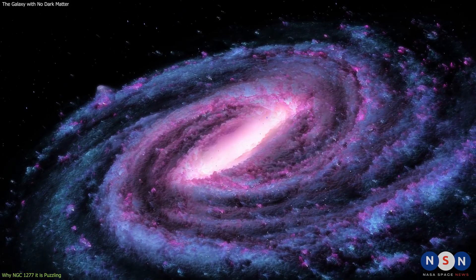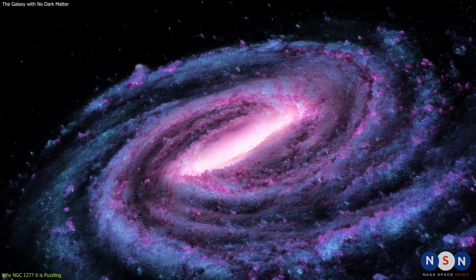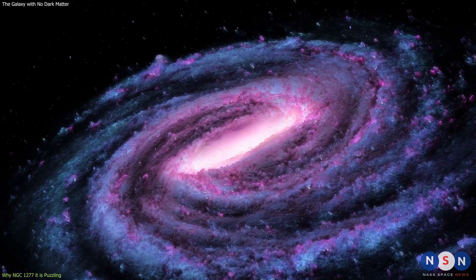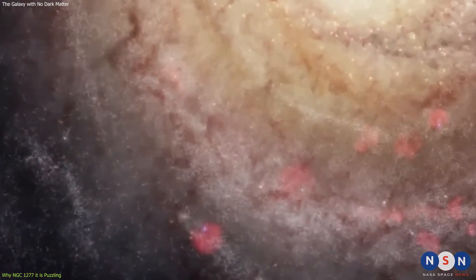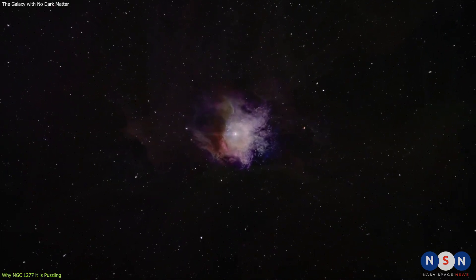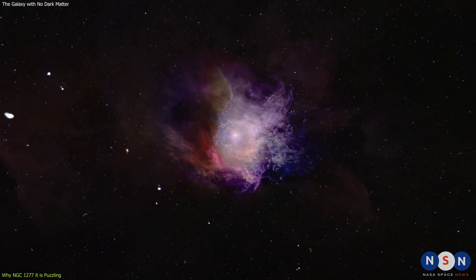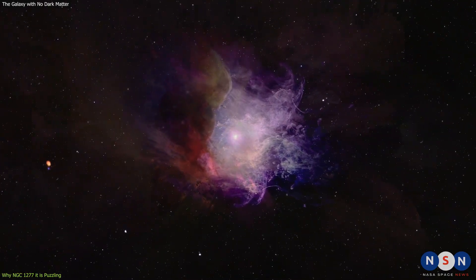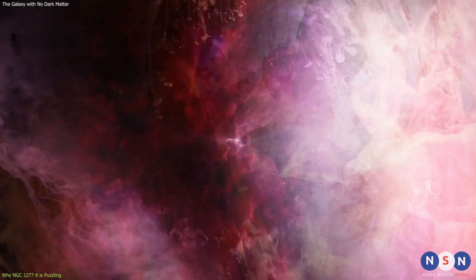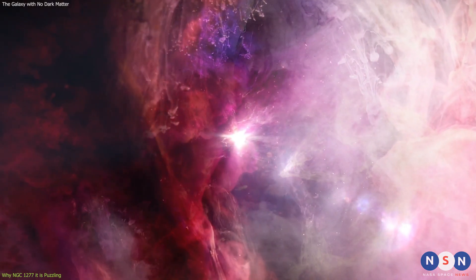The team estimated that the maximum amount of dark matter that this galaxy could have within its radius is less than 5% of its total mass, while the observations are consistent with zero dark matter. This finding is astonishing because it contradicts the current cosmological model that predicts that massive galaxies like NGC 1277 should have a significant amount of dark matter. In fact, this galaxy is the first galaxy of its kind to show no signs of dark matter.